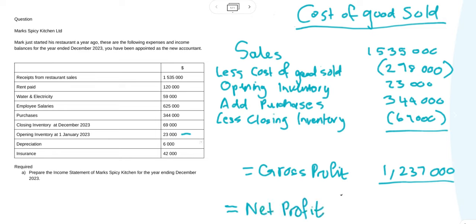In the next video we will find out how to get our net profit. For now we are just focusing on the cost of goods sold — how we get your cost of sales. The cost of goods sold can also be called your cost of sales. I'm taking it step by step so it can be easier for you to understand. Thank you for watching and don't forget to subscribe.